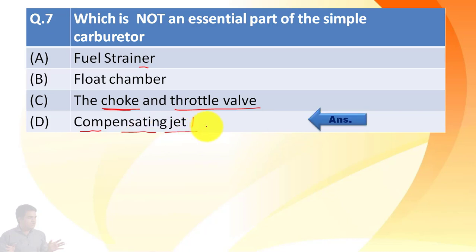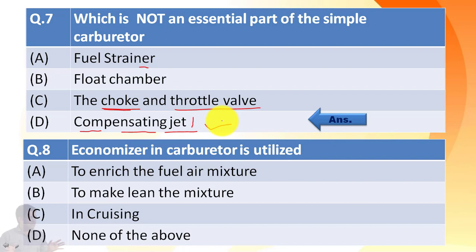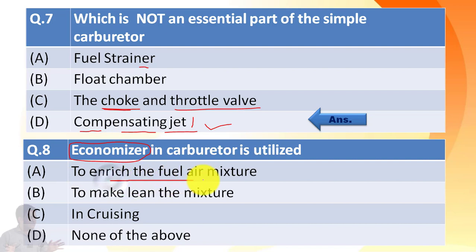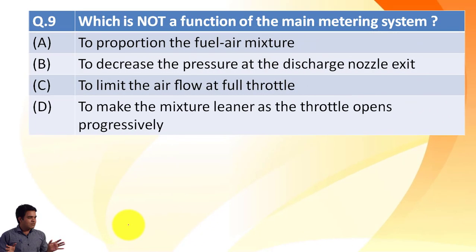The next question: the economizer in a carburetor is utilized for — 'economizer' is a slightly misleading word as it sounds related to economy. However, the economizer in the carburetor enriches the fuel-air mixture during special demands created by the engine. So the answer is: to enrich the fuel-air mixture.